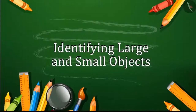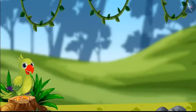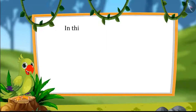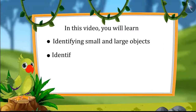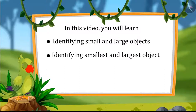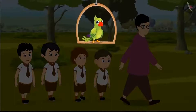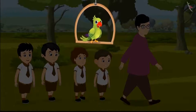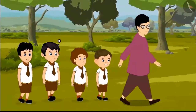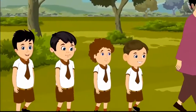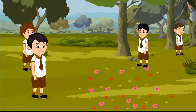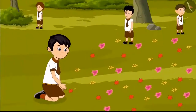Identifying large and small objects. Today, Chotu was taken for a walk by the school to a nearby forest. Chotu has homework to gather some things and paste them in his notebook. He thought of taking two flowers, two leaves, and two bird feathers from the forest. While walking, Chotu found a lot of fallen flowers under a tree and picked two flowers.